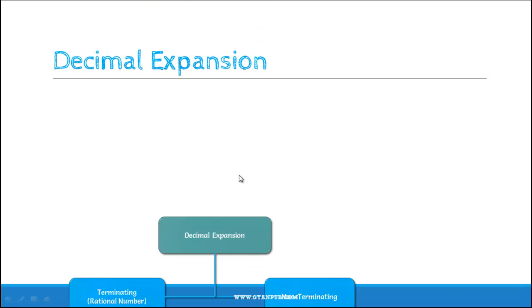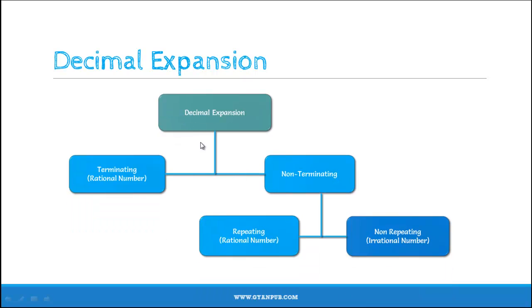Now let us see the types of decimal expansions. There are two types of decimal expansions: one is terminating decimal expansion and the other is non-terminating decimal expansion.